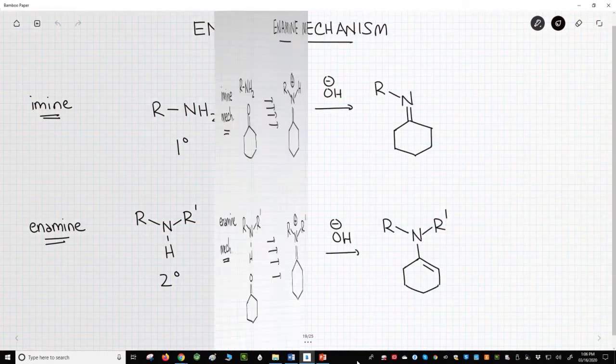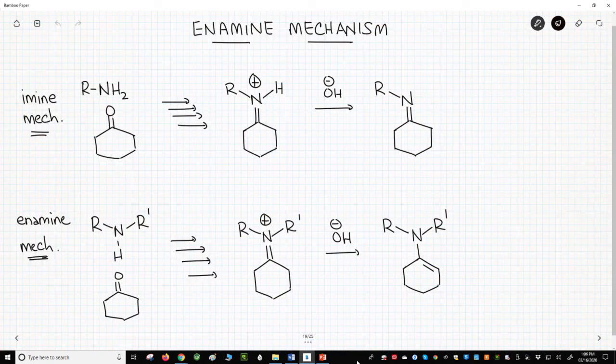What is the mechanism for making enamines? Well, since imines are so similar, let's review imines first. According to the mechanism we saw in a previous video, the reaction goes through four steps to make an iminium ion.